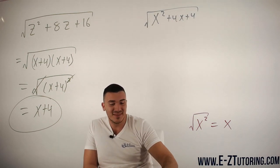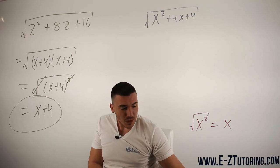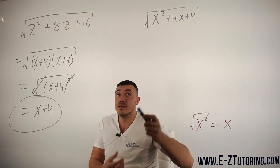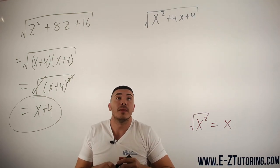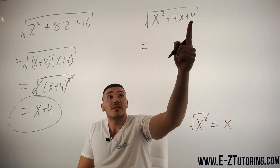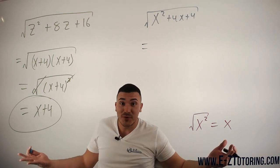So pretty simple. We're going to do the same thing for the other problem. We want two numbers that multiply to 4 and add to 4. Obviously, 2 plus 2.